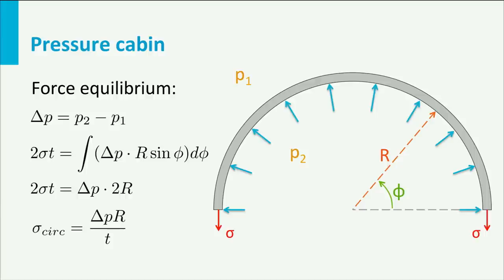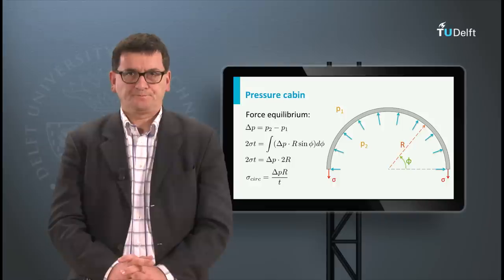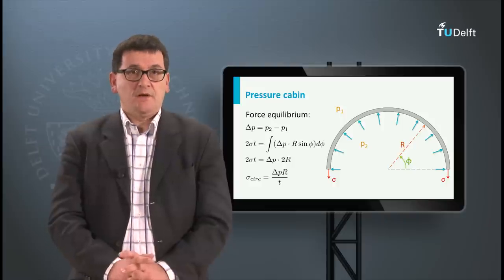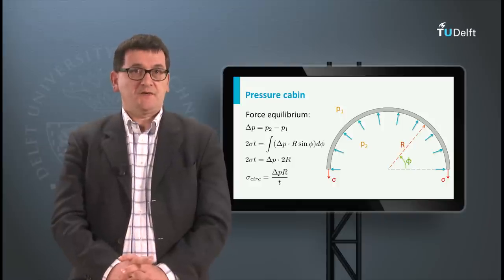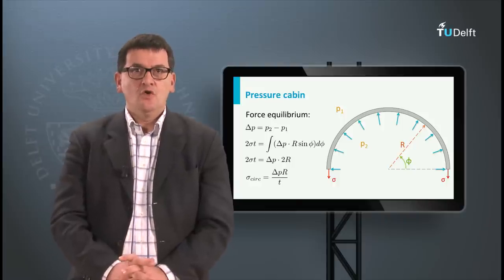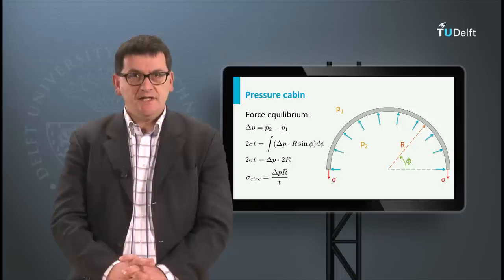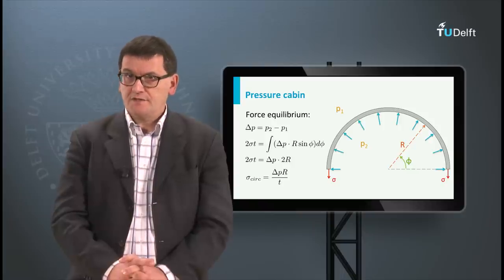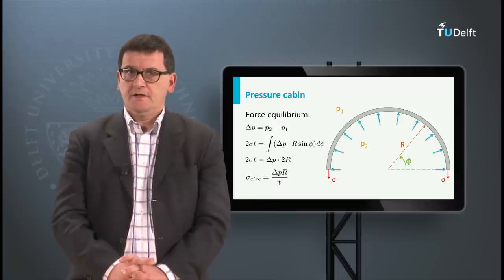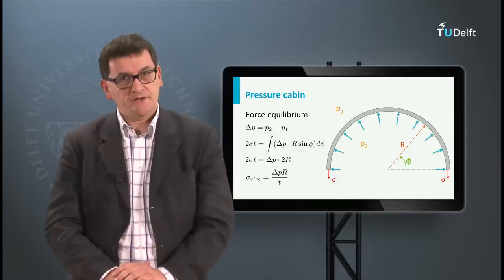When we need equilibrium, the downward forces should equal the upward forces. In this case, 2 times the hoop stress times the sheet thickness equals the integral of delta P over half the cylinder. After some manipulations we obtain a very simple formula: hoop or circumferential stress equals the pressure difference times the radius of the cylinder divided by the thickness of the skin.